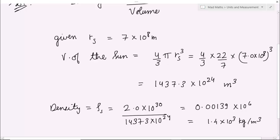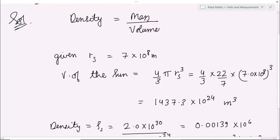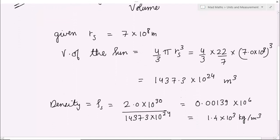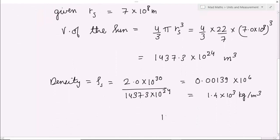ठीक है, यह आपका kg में था और यह meter cube में — mass upon volume — तो unit kg per meter cube आता है। अब देखिए, solid, liquid और gas में से कहाँ पर यह लाए करेगी। आप जानते हैं, water की density क्या होती है — 10 to the power 3 kg per meter cube। अब इसकी density थोड़ी सी ज़्यादा है, 1.4 — तो इससे आपके अनुमान लगा सकते हैं कि यह solid और liquid के बीच में लाए कर रहा है।